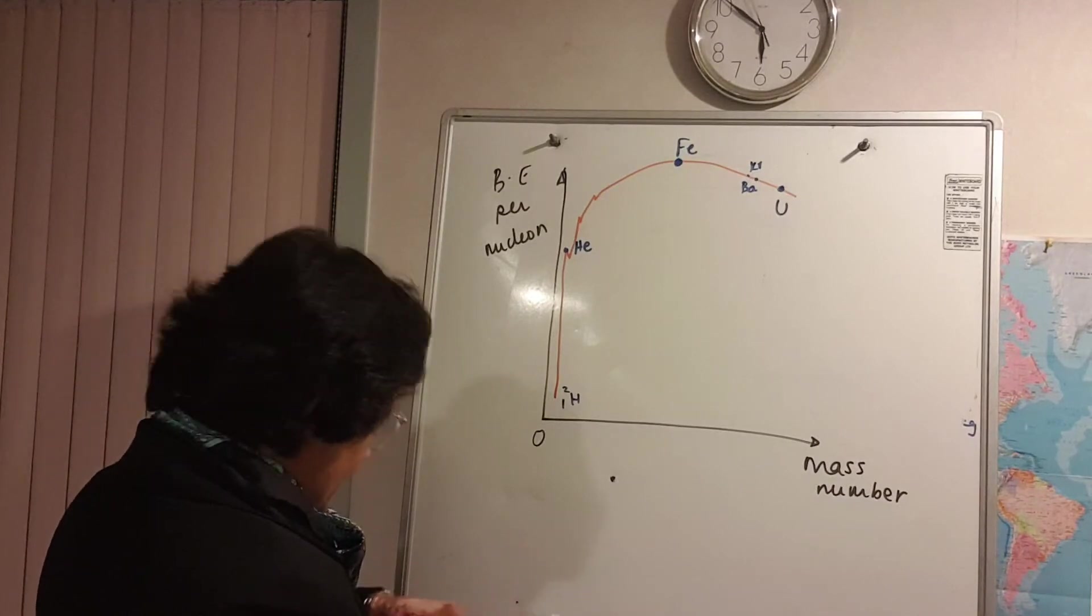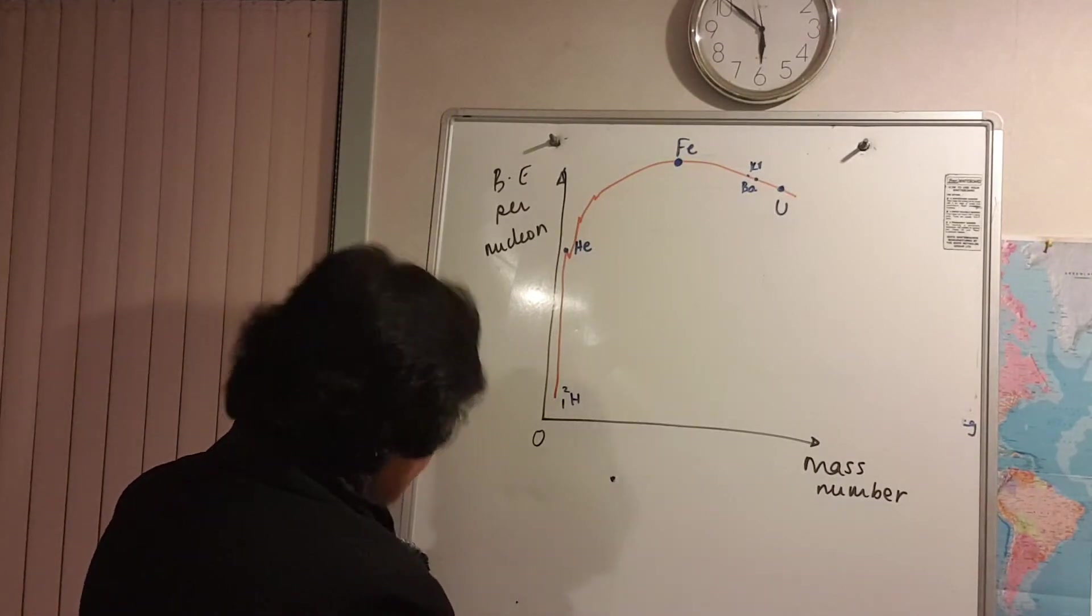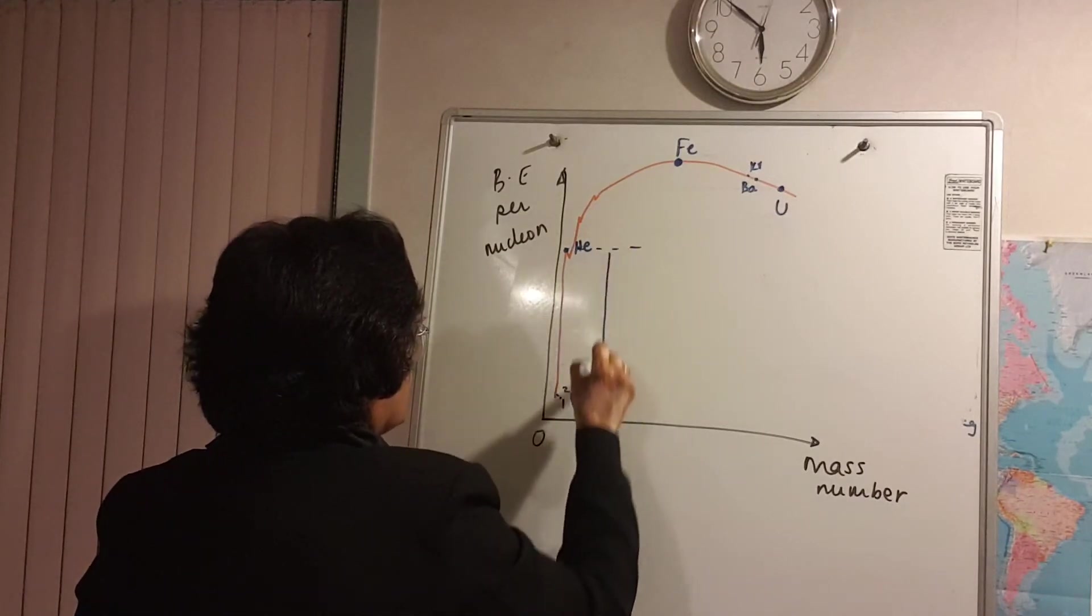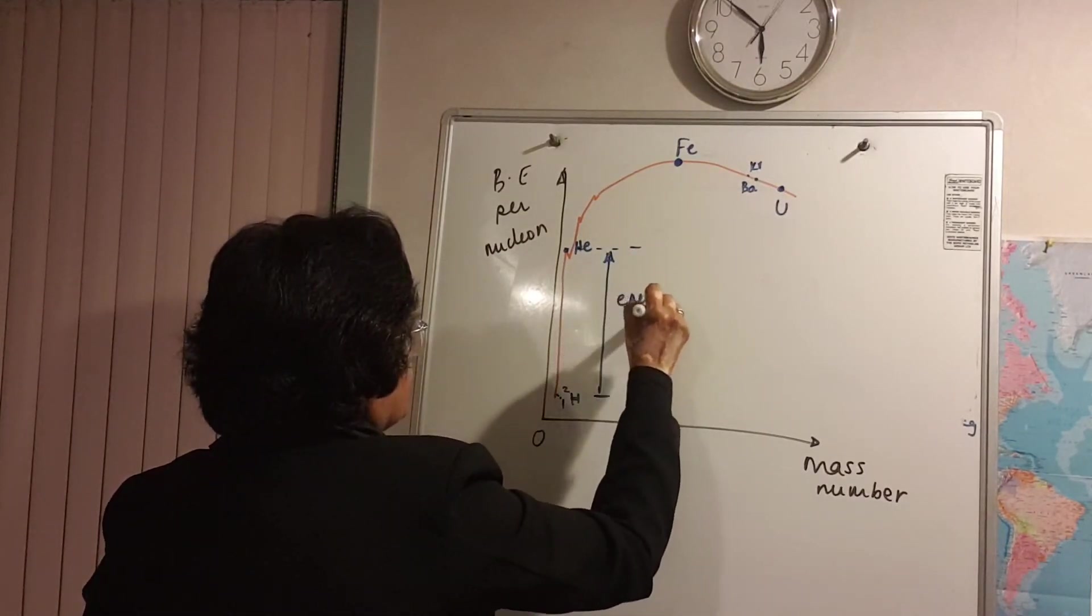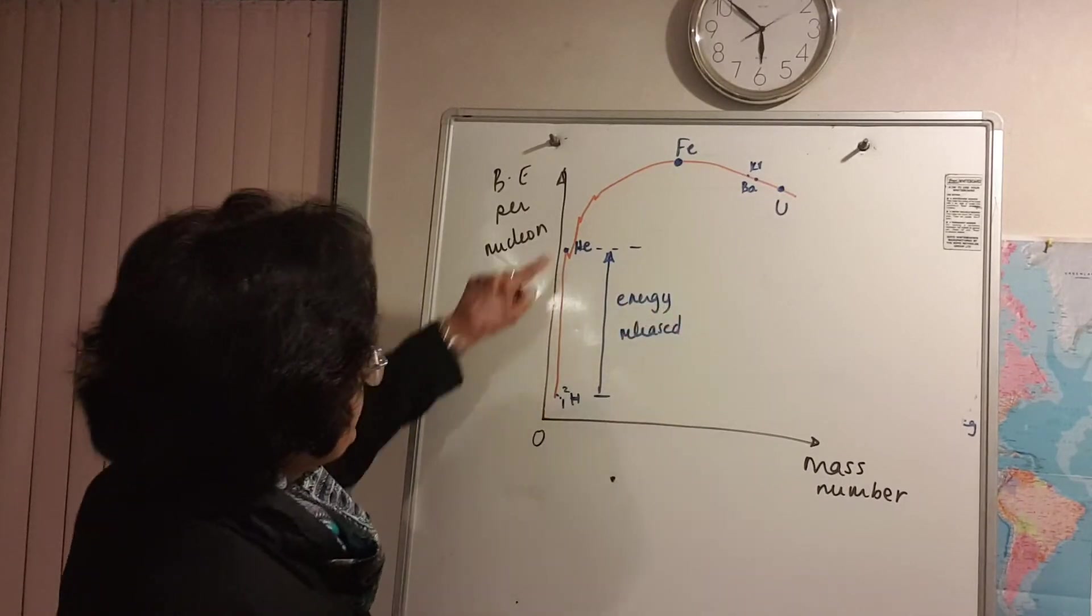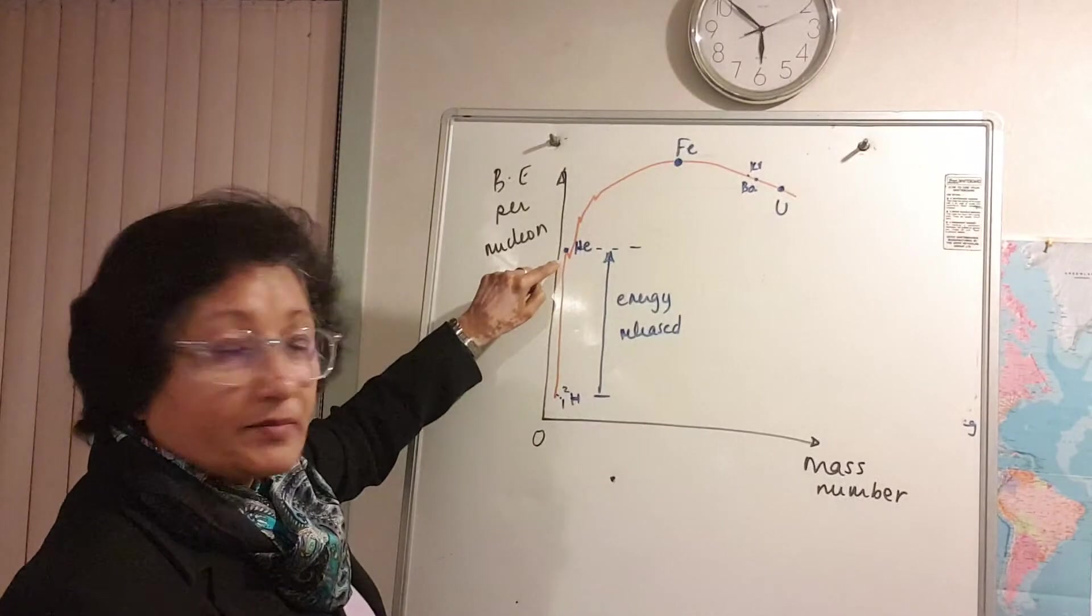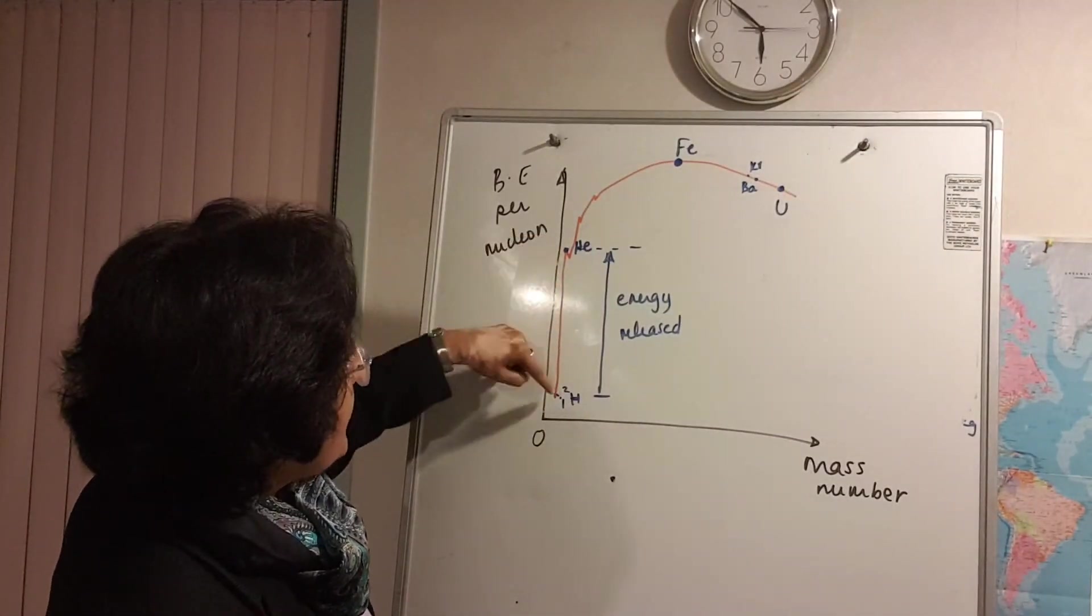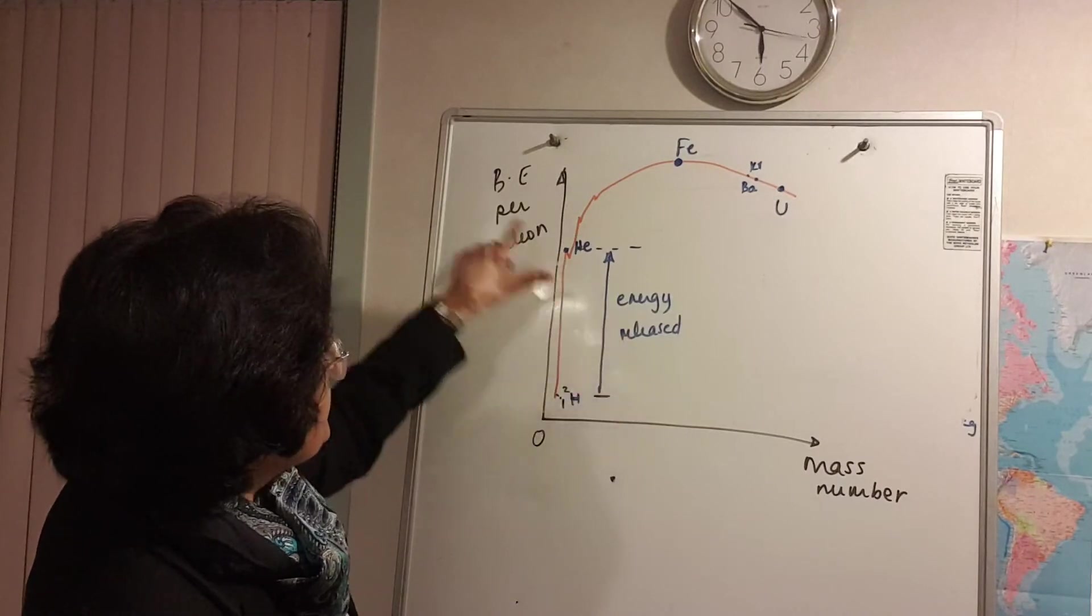So when isotopes of hydrogen fuse to become helium which has got a greater binding energy per nucleon, the amount of energy that is released is this much. There's a huge jump because a huge amount of energy is released, and that's the amount of energy released per nucleon.